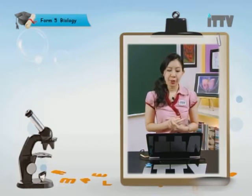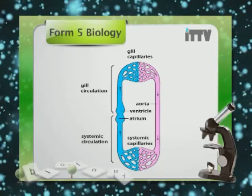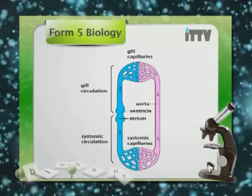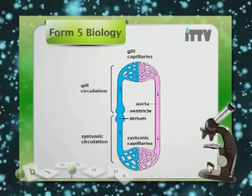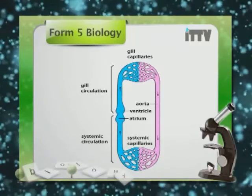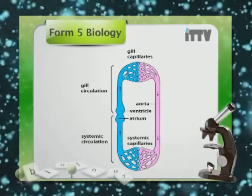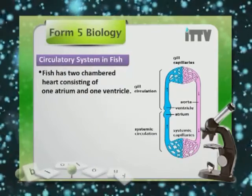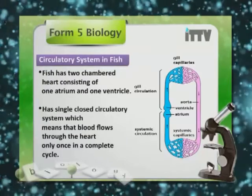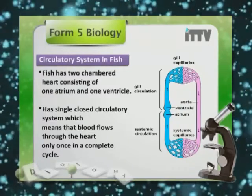Let's look at other closed circulatory systems, focusing on the circulatory system in fish. Closed circulatory systems are found in vertebrates, meaning blood flows under pressure via closed vessels continuously around the body. Contraction of the heart creates pressure which maintains the flow of blood. Fish has a two-chambered heart consisting of one atrium and one ventricle.